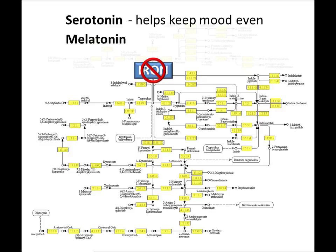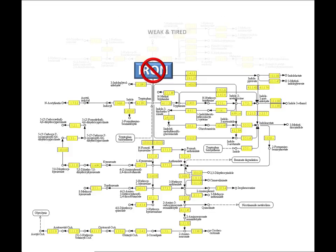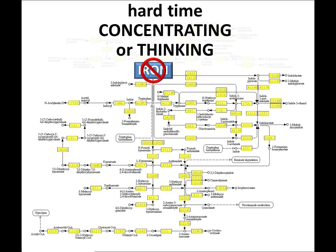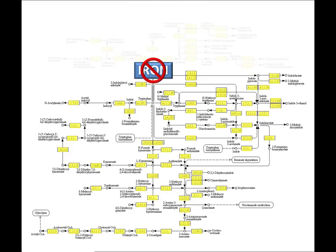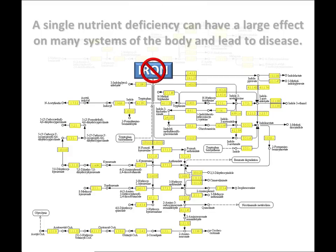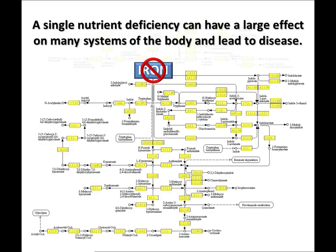Serotonin helps keep our mood even, and melatonin helps us to sleep restfully. This explains in part why iron deficiency leads to symptoms like feeling weak and tired, feeling grumpy, having headaches, and having a hard time concentrating or thinking. So you can see how a single nutrient deficiency can have a large effect on many systems of the body and lead to disease.